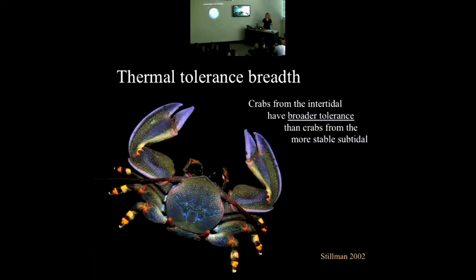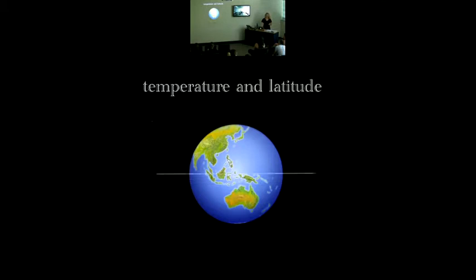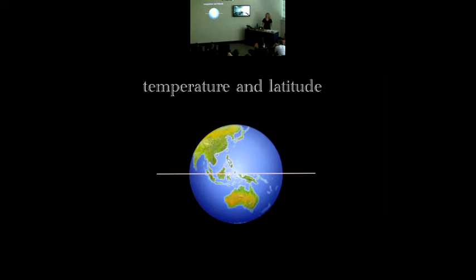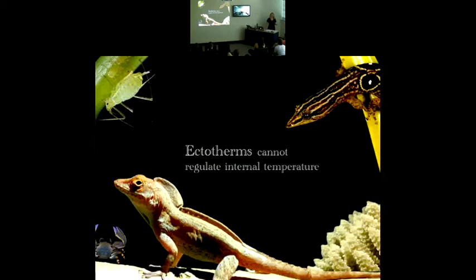This principle can be applied to a larger scale. Temperatures are highest and most stable around the equator, and as you move towards higher latitudes, regions experience greater ranges of temperatures throughout the year. This influences the distribution of life on Earth, particularly in ectotherms like crabs, corals, and lizards, which are essentially cold-blooded animals that can't control their internal temperatures, at least not physiologically.